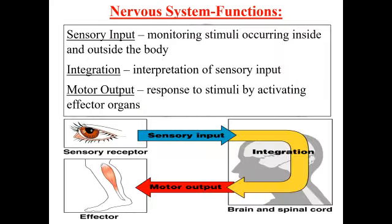Functions of the Nervous System consist of sensory input, integration, and motor output. Sensory input carries sensation with the help of sensory receptors and sends it to the integration part — that is the brain and spinal cord. The brain and spinal cord then send impulses to the effector organ with the help of motor output.